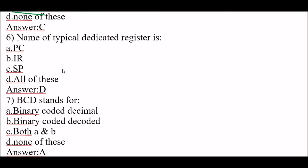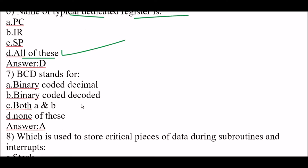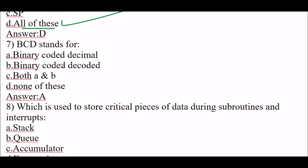Next question: names of typical dedicated registers are option A: PC, option B: IR, option C: SP, option D: all of these. The right answer is option D, all of these. Next question: BCD stands for — option A: binary coded decimal, option B: binary coded decoded. The right answer is option A.